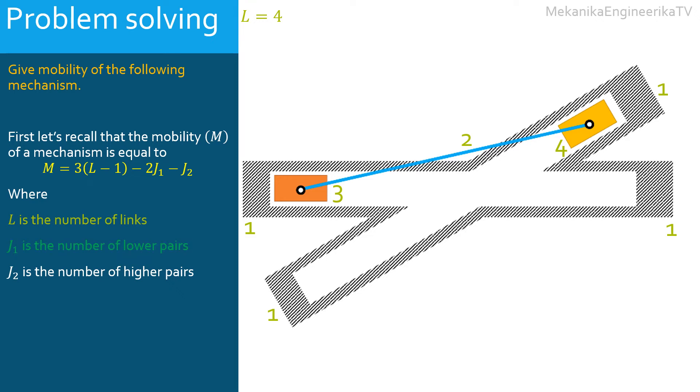The lower pairs here are rotating joints and translating joints. There are 2 prismatic pairs connecting each slider to the ground, and 2 pin or rotating joints connecting each slider to the bar. In all, there are 4 lower kinematic pairs, each allowing 1 degree of freedom.